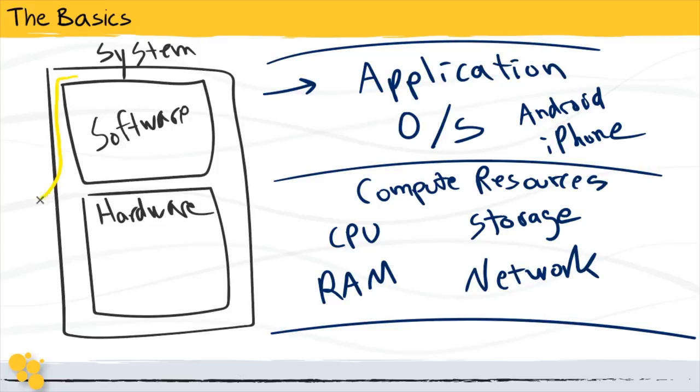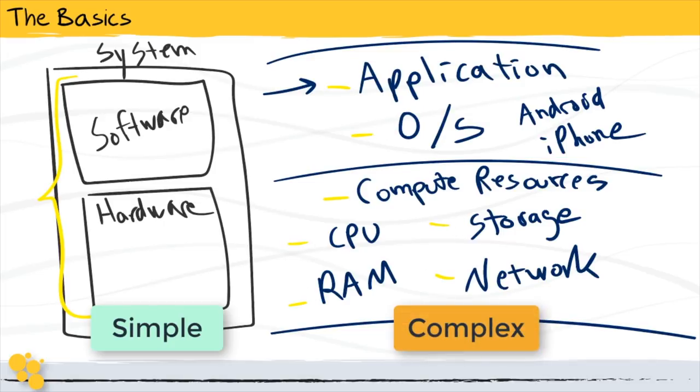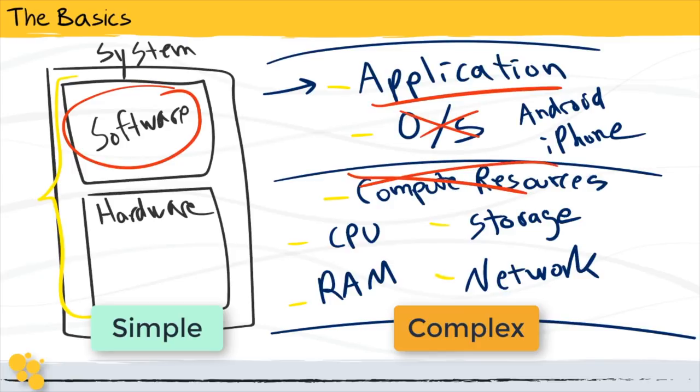Wow, so we just went from a pretty simple two-tier definition of what a system is into a much more complex look at all of the interworkings of it. This sort of complexity and simplification being contrasted is exactly what cloud computing is all about. We are saying, if I am a software developer and I care about applications, then I don't really want to deal with the operating system or managing any of the compute resources. This is exactly where cloud computing really begins to shine.